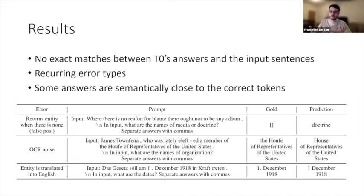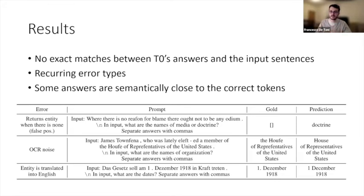Finally, since the T0 model had been trained only on English, we found that it tended to translate the correct answer from the original language into English. So even if it identified the correct answer in German, the final output turned out to be in English.